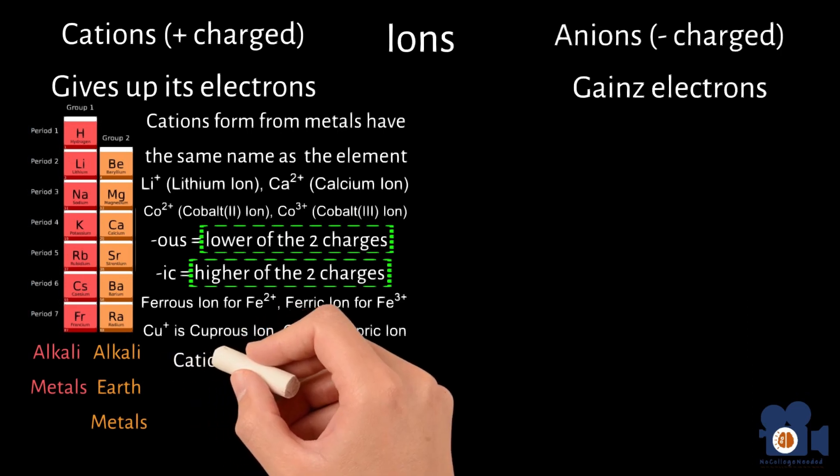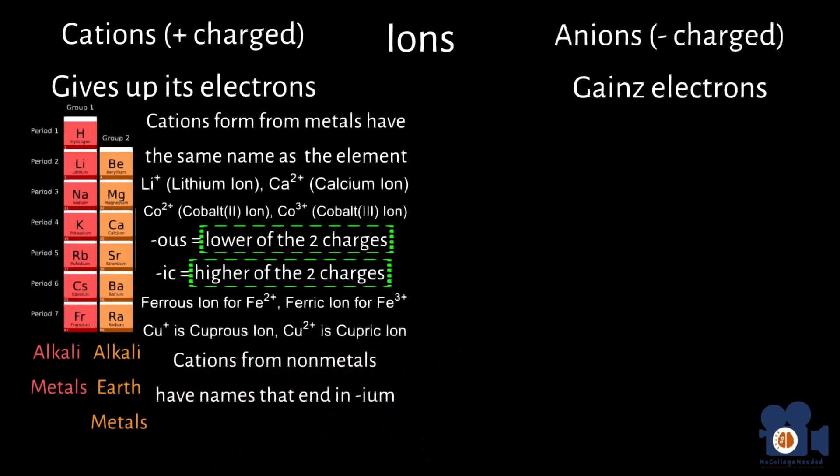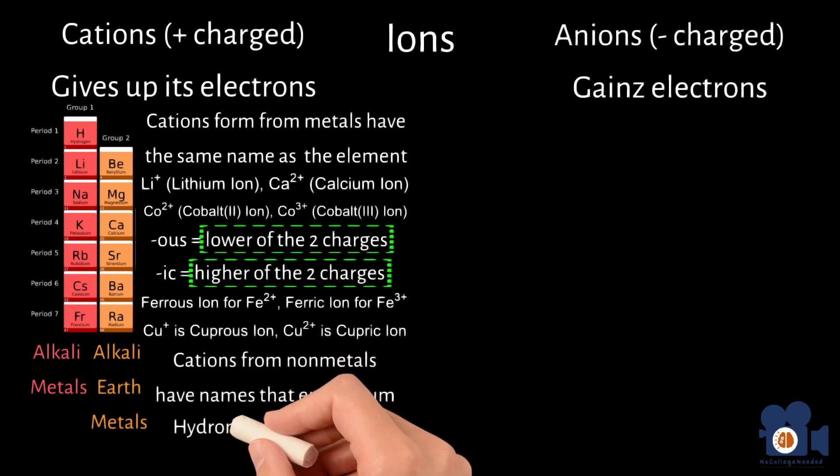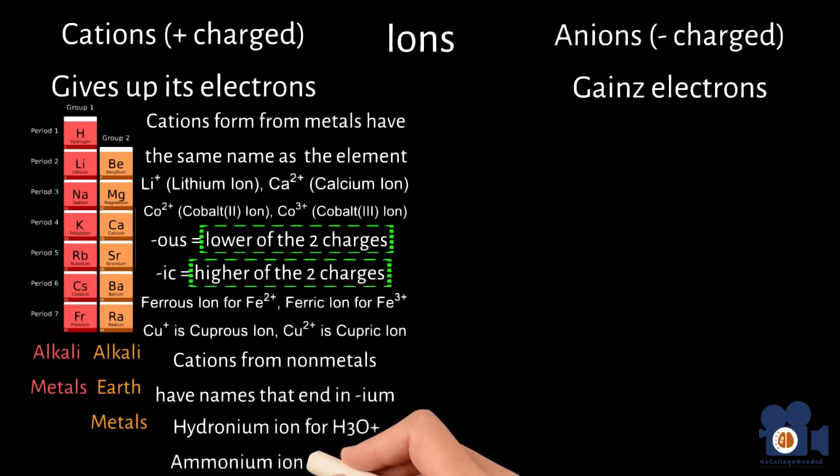Lastly, cations named from nonmetals have names that end in IUM, such as the hydronium ion for H3O+, and the ammonium ion for NH4+.